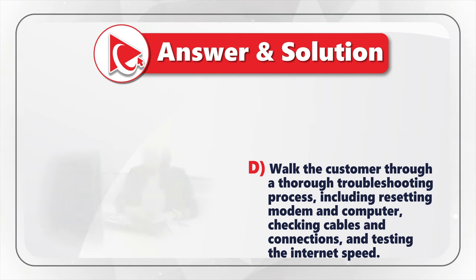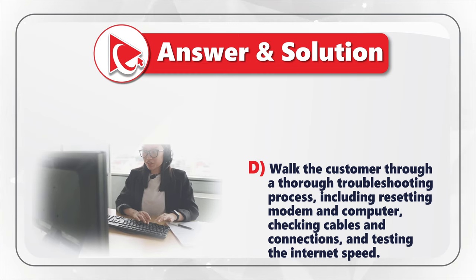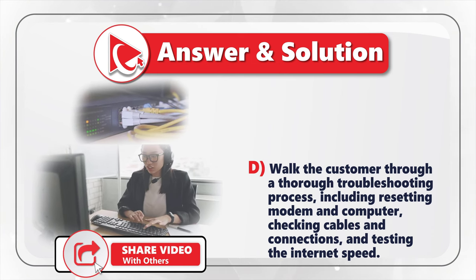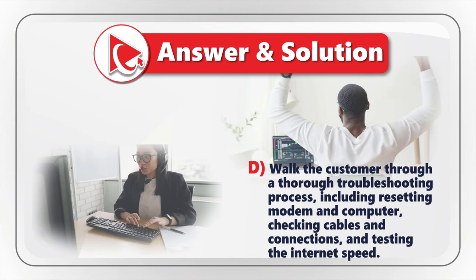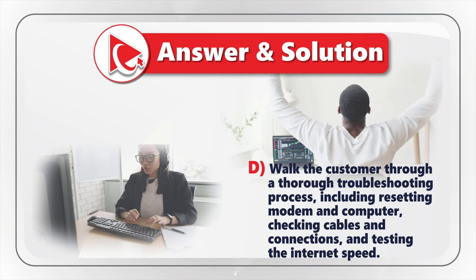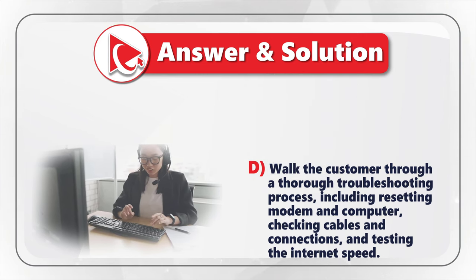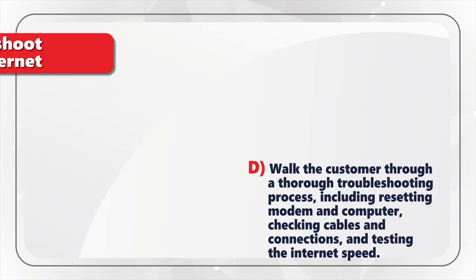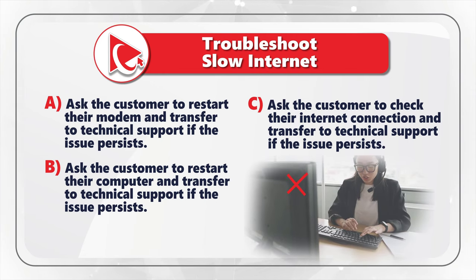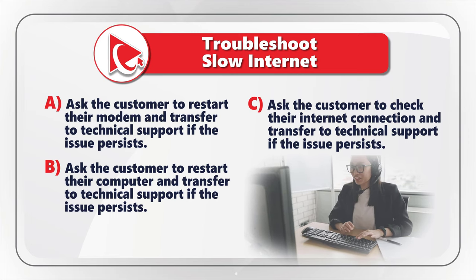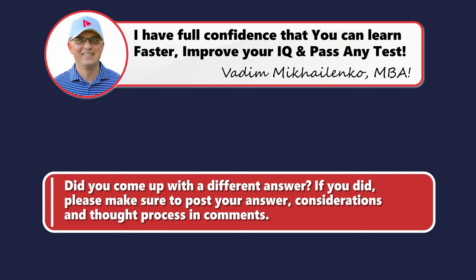I believe the correct answer is Choice D. In Choice D, you walk the customer through a thorough troubleshooting process, including resetting the modem and computer, checking cables and connections, and testing internet speeds. This approach shows commitment to excellent customer service and may resolve the issue without a technical support transfer. Choices A, B, and C are incorrect because they only ask the customer to perform a single action and then transfer them, which may not resolve the issue and results in longer wait times. CSR stands for Customer Service Representative.